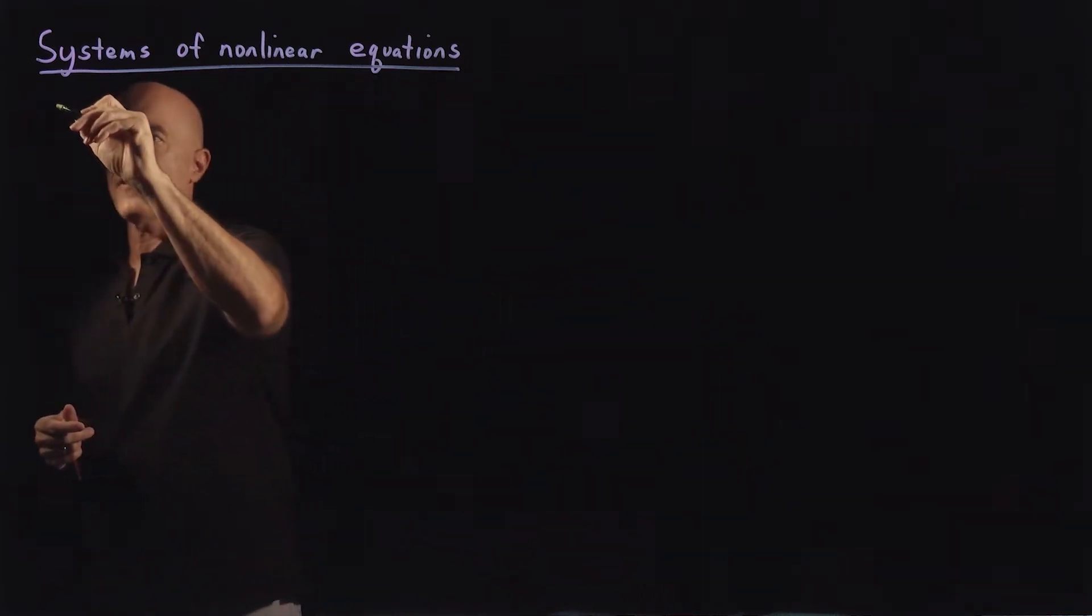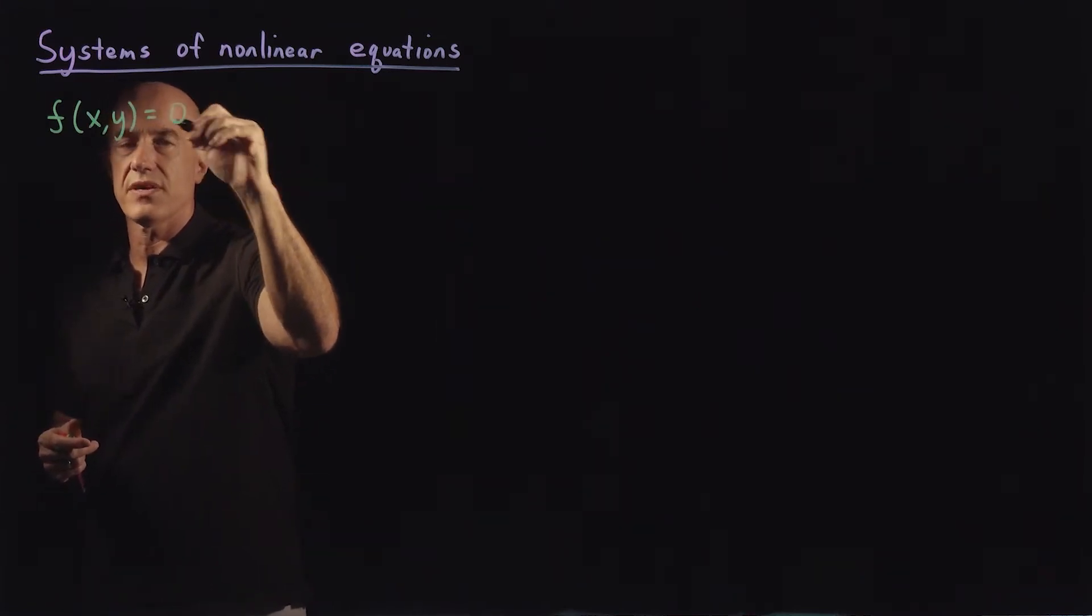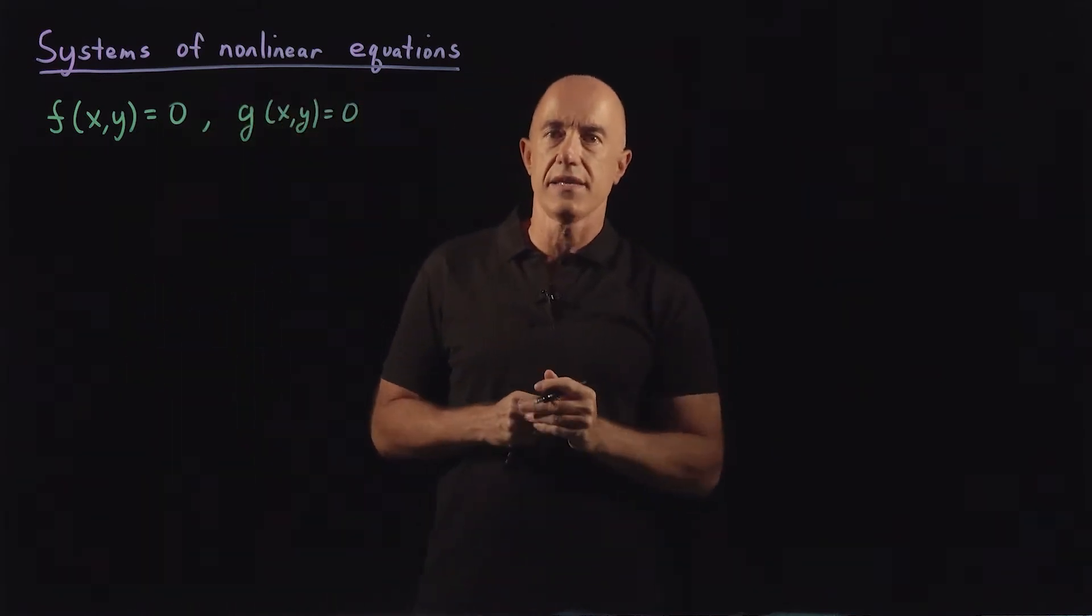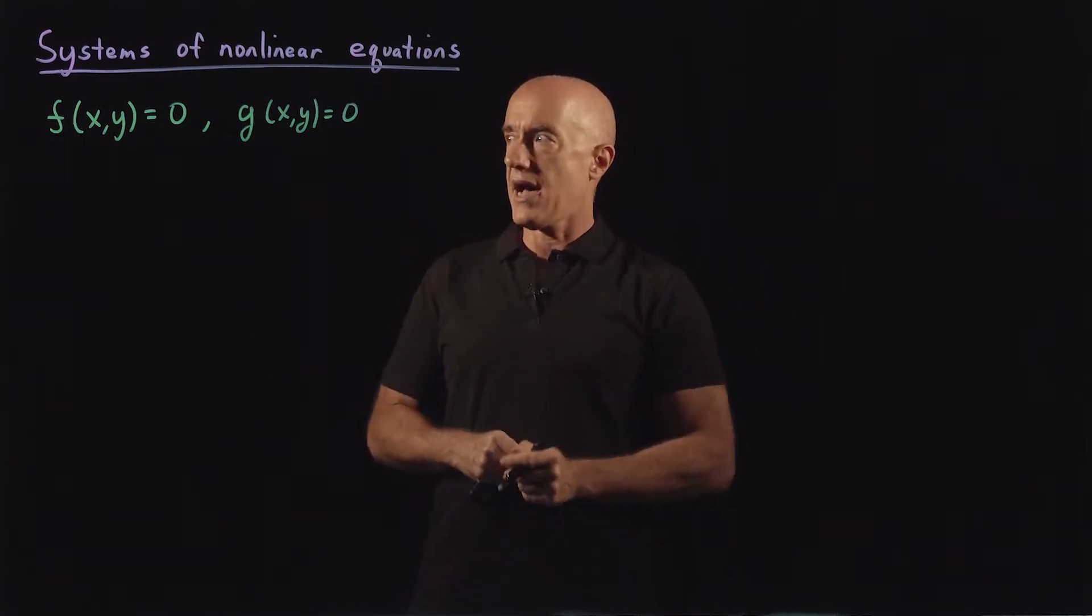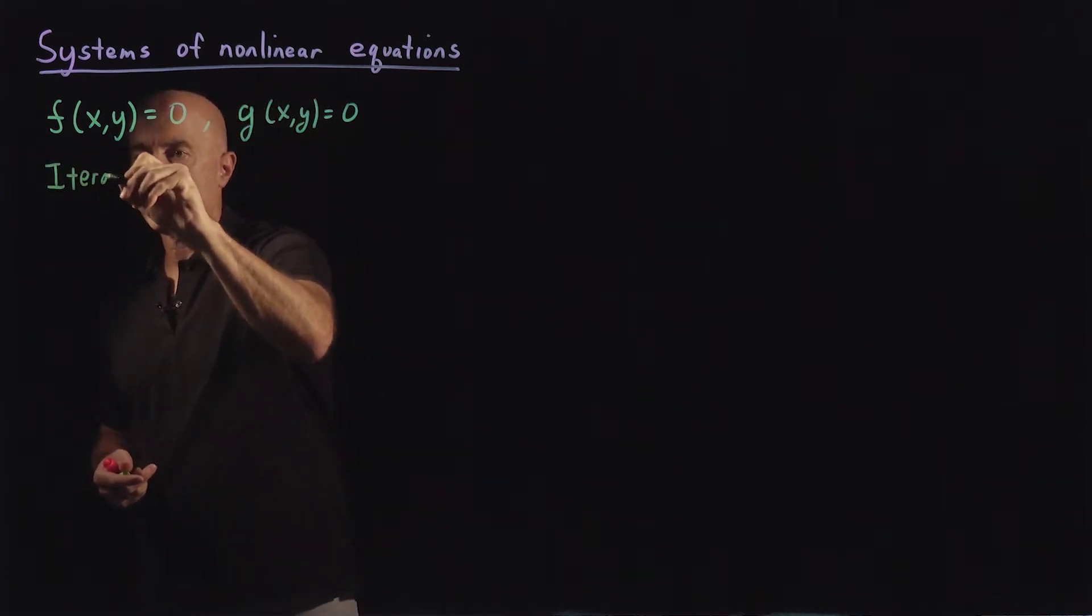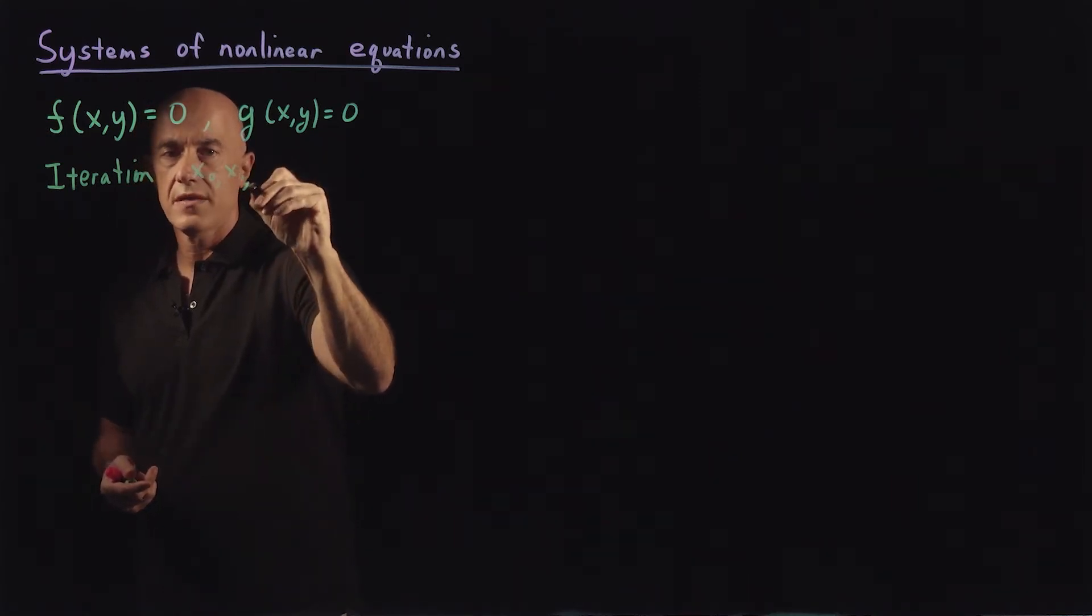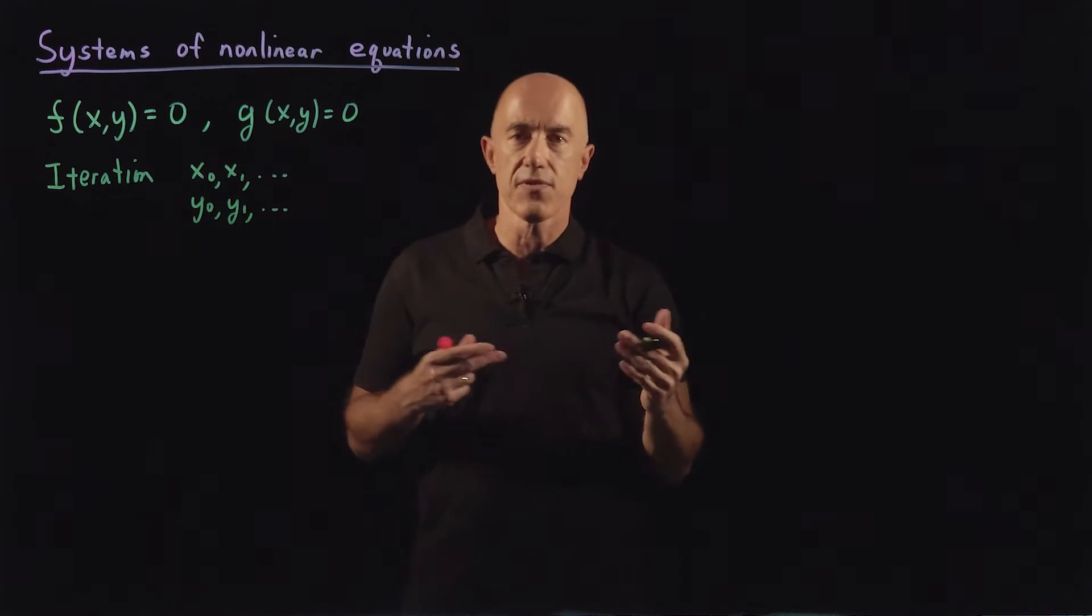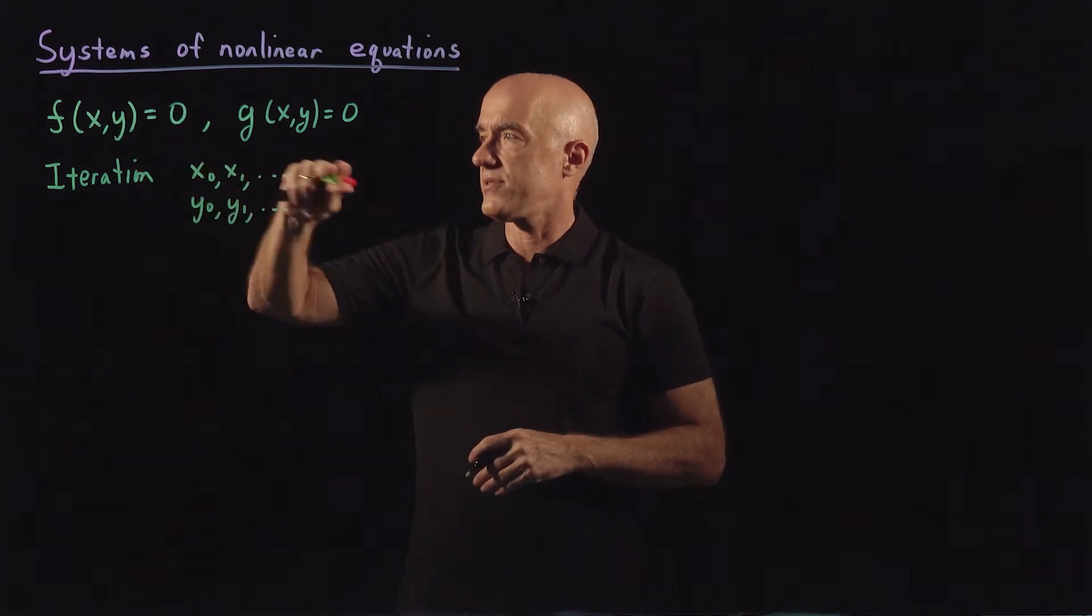So we want to solve two nonlinear equations. I'll write this as f of xy equals zero and g of xy equals zero. A root finding method, but instead of one nonlinear equation, we have here two nonlinear equations. So our iteration is going to be a sequence of values, x naught, x1, and so on, and y naught, y1, and so on, that hopefully will converge to one of the roots of this system of equations.